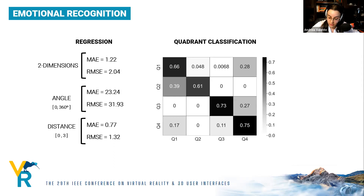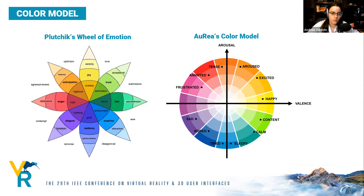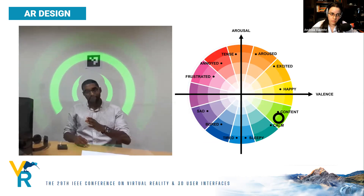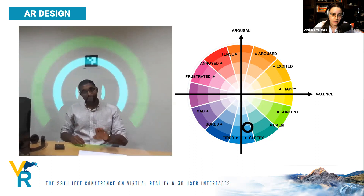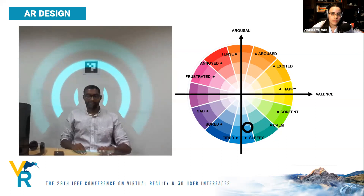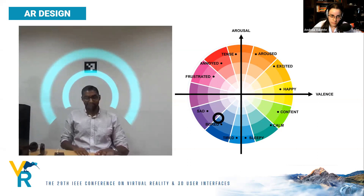We validated a color model with participants using the tertiary colors of the red-yellow-blue color model, with brightness encoding emotional intensity, as in Plutchik's wheel of emotion. For the AR system, we created a ripple effect placed around the partner's face — an aura updated every two seconds with new ECG data.